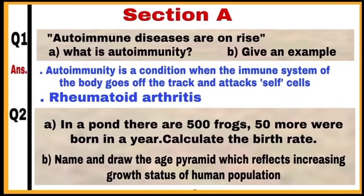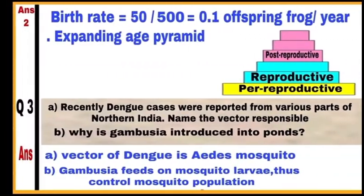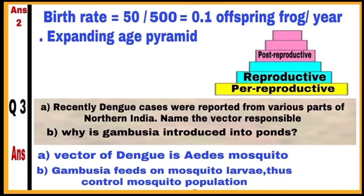These are question number 1 and question number 2 of Section A. Note some important tips to prepare for the exam. First, do numerical based questions, for example, calculating birth rate and death rate. You must go through all diagrams from the Ecology section, chapters 13 and 15 of your NCERT book.